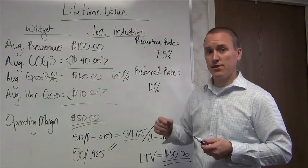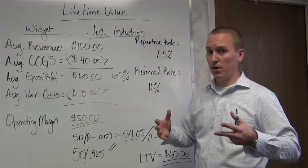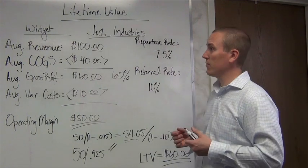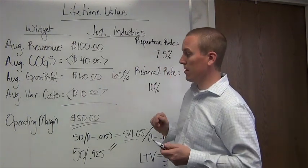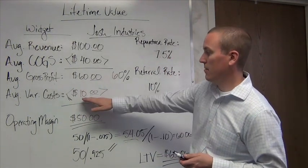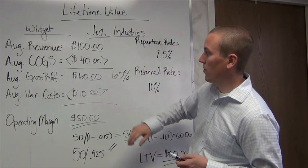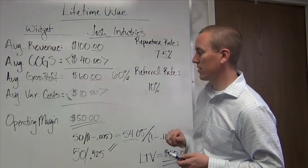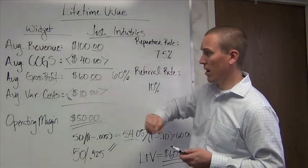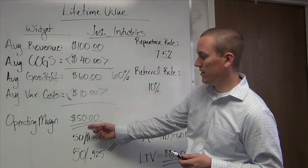So say I have a guy downstairs in logistics that does all my shipping and processing and fulfillment, and every time we sell a widget, it takes him an hour, and I pay him $10 an hour. That's $10 per widget. So I'm going to subtract that from my average gross profit, and that gives me $50. $50 is my operating margin.